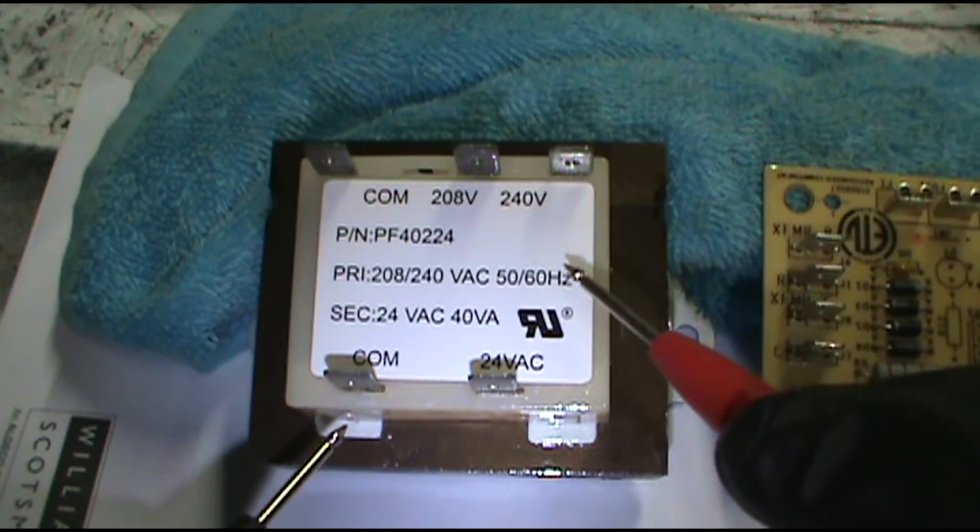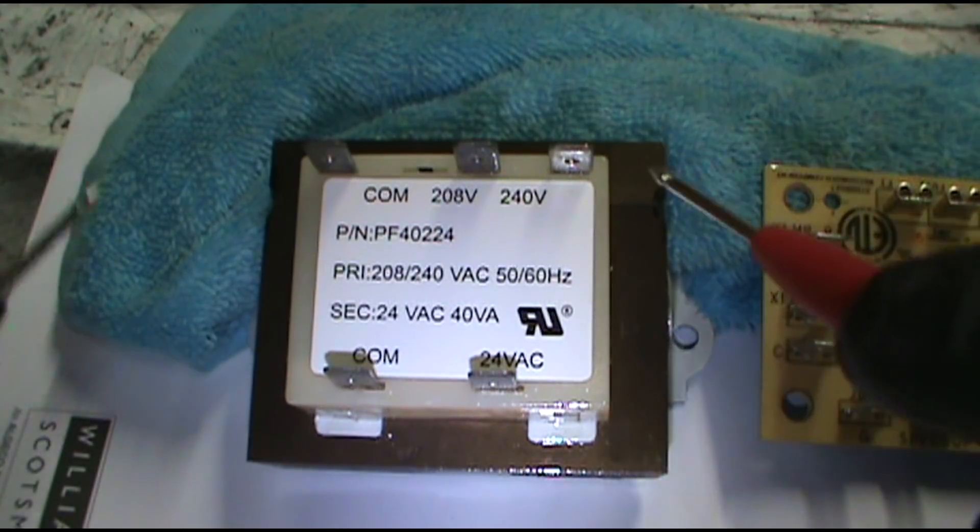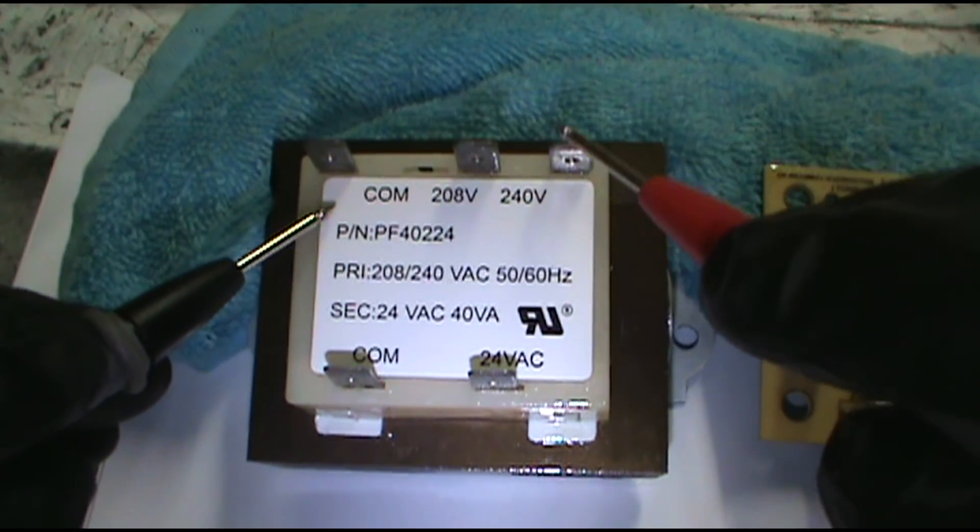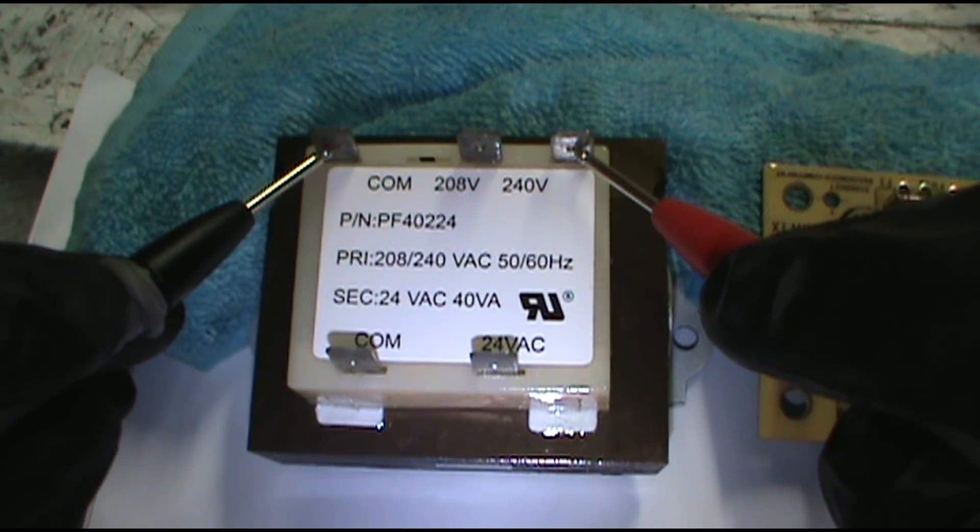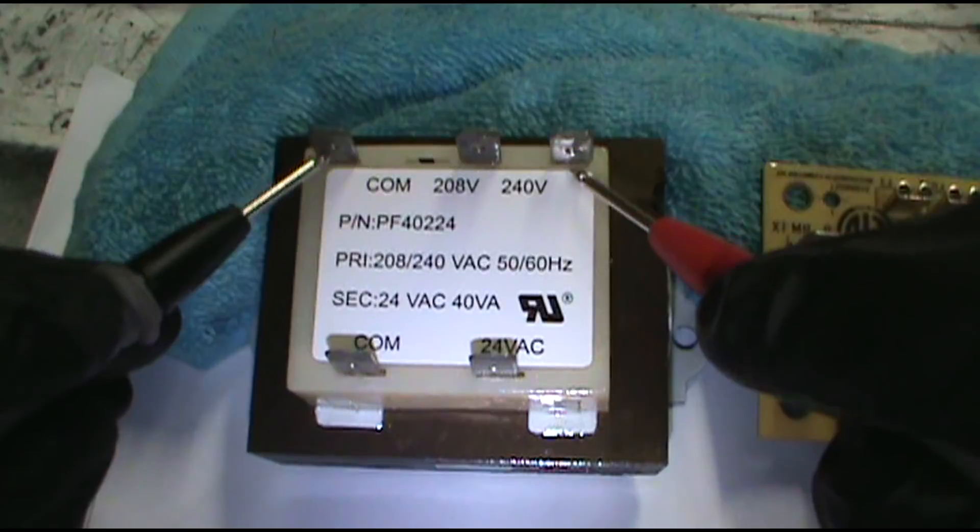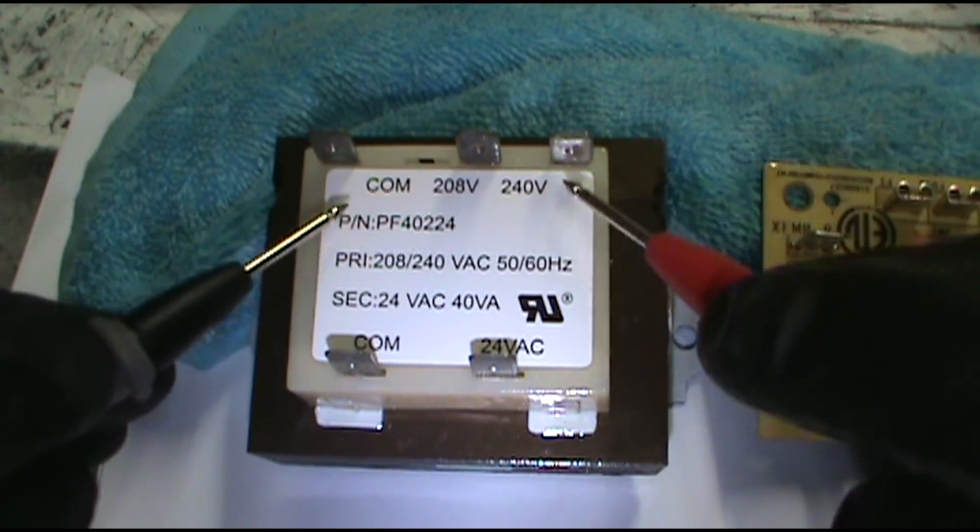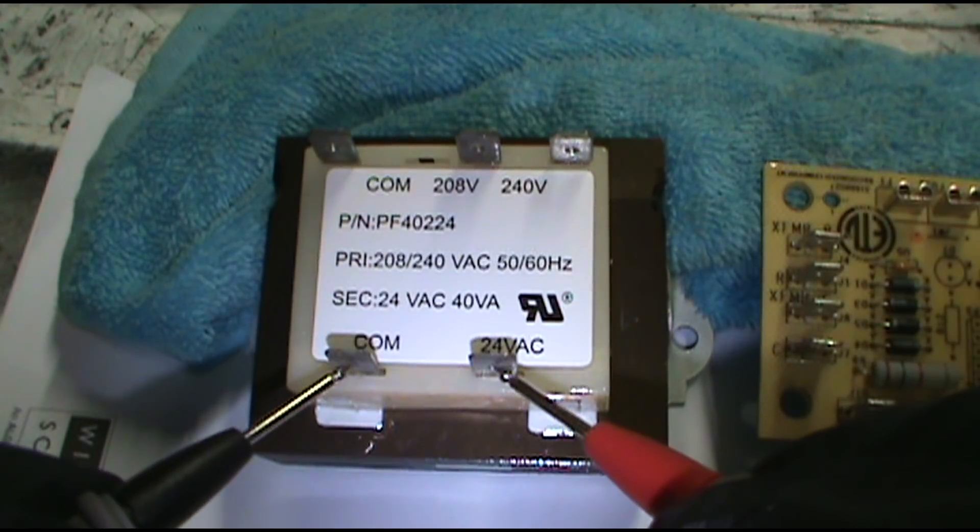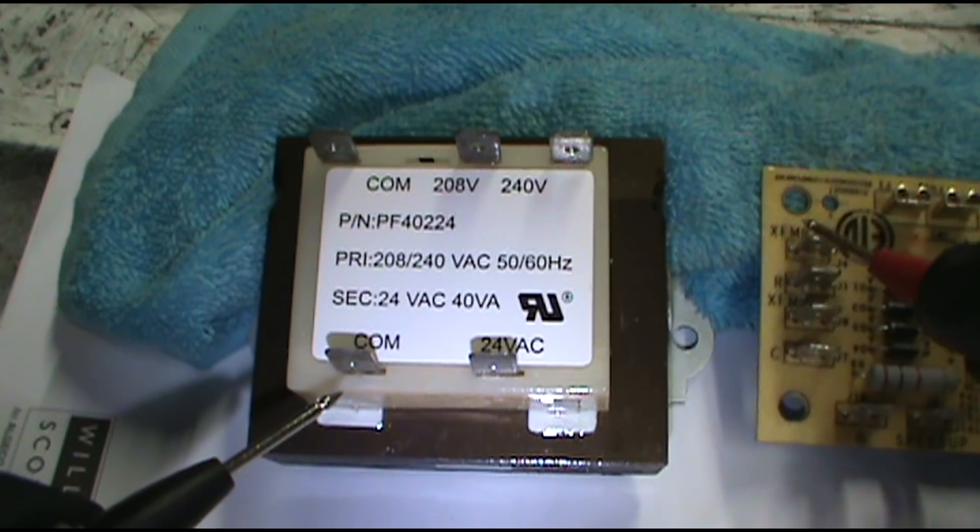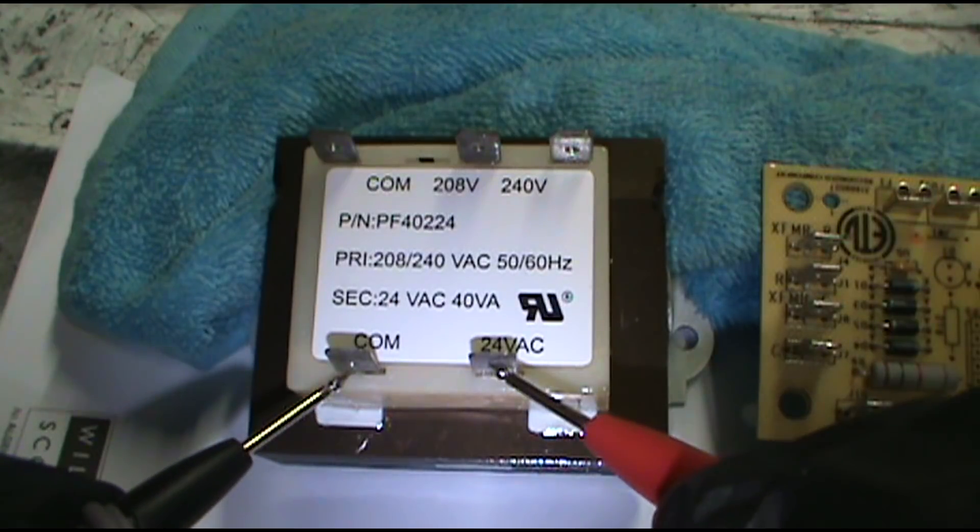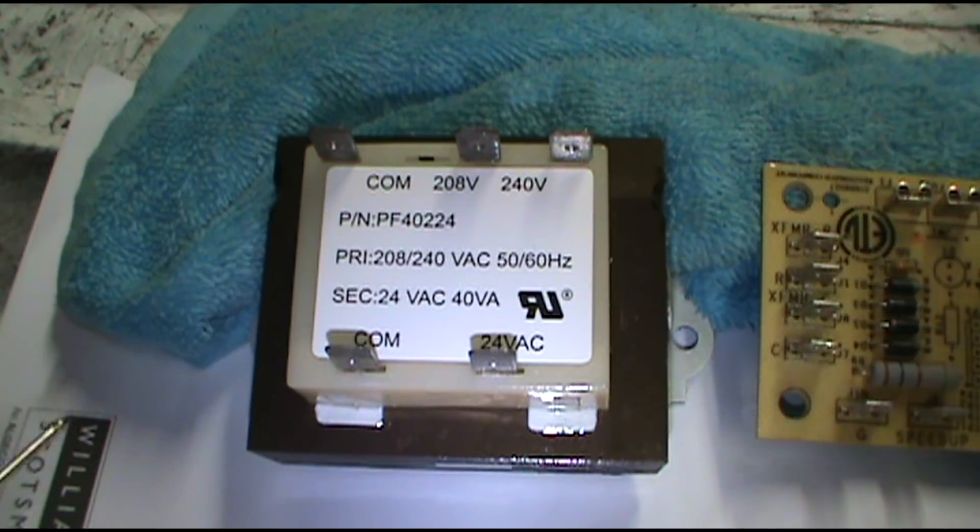This is the high voltage, this is the 240 coming in off the lug. Touch here and here, you should have 240. This just transforms the power into 24 volts. You should have 24 volts coming out of here and into the board. So if you don't have 24 here, change out the transformer.